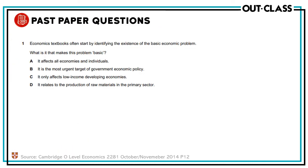Let's take a look at some past paper questions. Economics textbooks often start by identifying the existence of the basic economic problem. What is it that makes this problem 'basic'? Option A: it affects all economies and individuals. B: it is the most urgent target of government economic policy. C: it only affects low-income developing economies. D: it relates to the production of raw materials in the primary sector. The answer is A — it is considered the basic economic problem because it affects all economies and individuals. The other options each target only one particular area of economics.